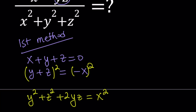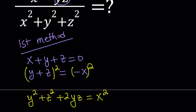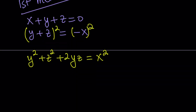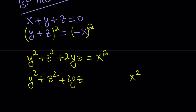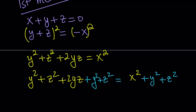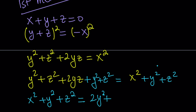I would like to get x squared plus y squared plus z squared on the right-hand side. So I'm going to add y squared plus z squared to both sides. And that's going to give me x squared plus y squared plus z squared on the right-hand side. So we can write this as x squared plus y squared plus z squared equals 2y squared plus 2z squared plus 2yz. This is something I'd like to use later.